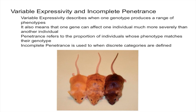To sum it all up: variable expressivity is when one genotype produces a variety of phenotypes — like the mouse example where they all have the same genotype but different colors. Incomplete penetrance, on the other hand, is defined as the percent of individuals that exhibit a trait given that they have the genotype or the gene.